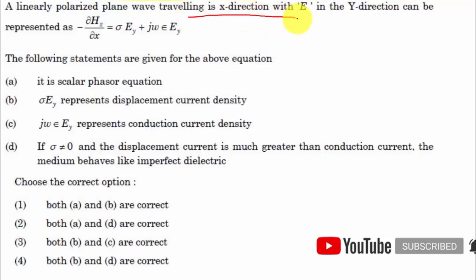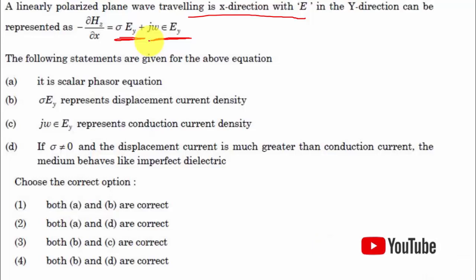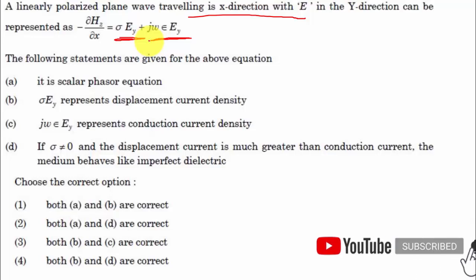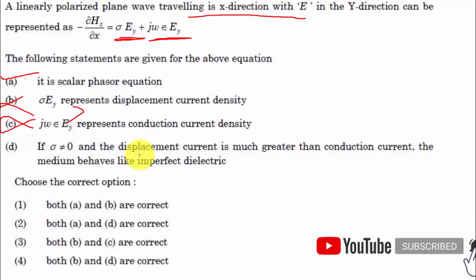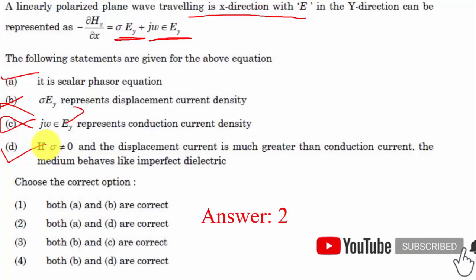Seventeenth question: a linear polarized wave traveling in the X direction with E in the Y direction can be represented as −∂Hz/∂x = conduction current JC = σ·EY plus displacement current = jωε·EY. Statement 1: it is a scalar phasor equation — yes. Statement 2: σ·EY represents displacement current — wrong. Statement 3: jωε·EY represents conduction current — also wrong; these two are interchanged. Statement 4: if σ ≠ 0 and displacement current is much greater than conduction current — yes, as in transformers where displacement current exists between primary and secondary windings. Hence option number 2 is correct.